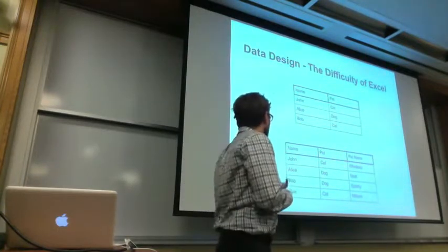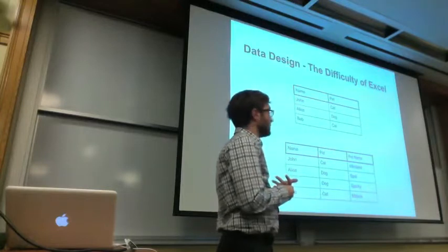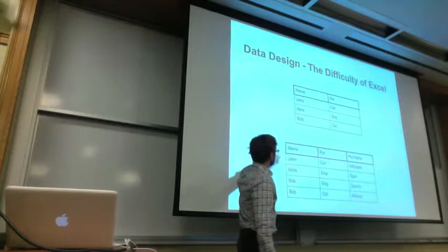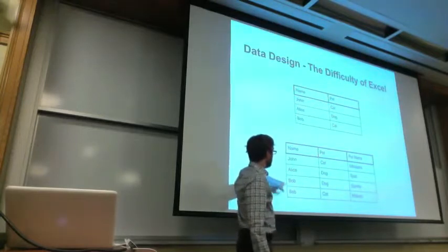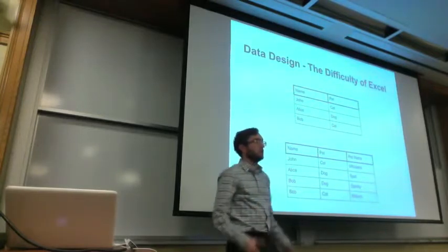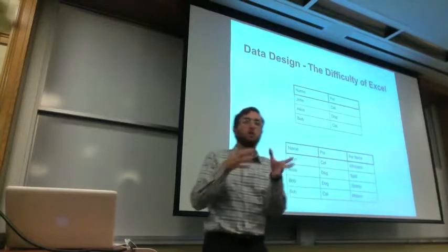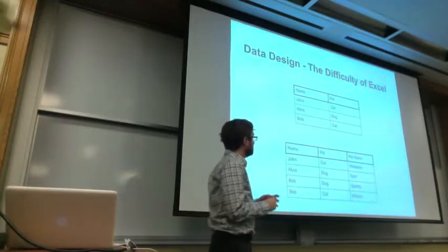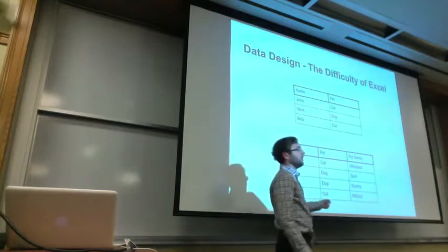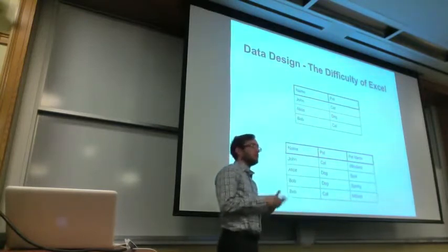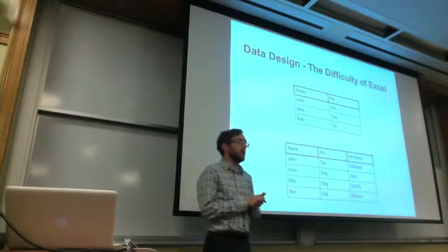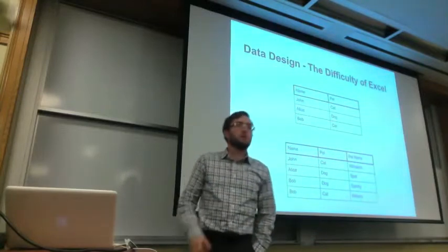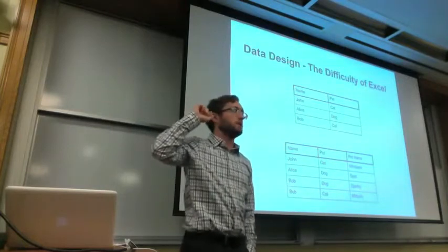One thing we can do to alleviate that problem is to have a unique identifier, like an ID column. This is person one, person two, and we'd repeat person three here so we know exactly who that person is. It becomes easier to count all the dogs and cats. You can use pivot tables in Excel to get back to the number of pets each person has. How many people have used pivot tables?